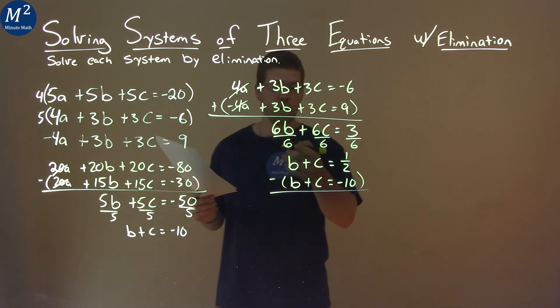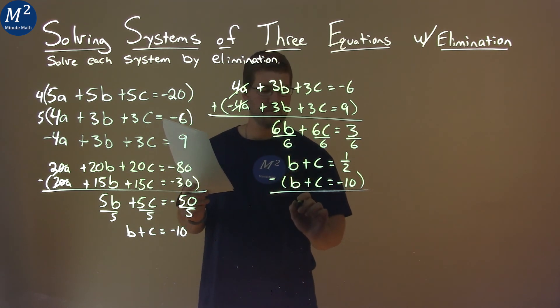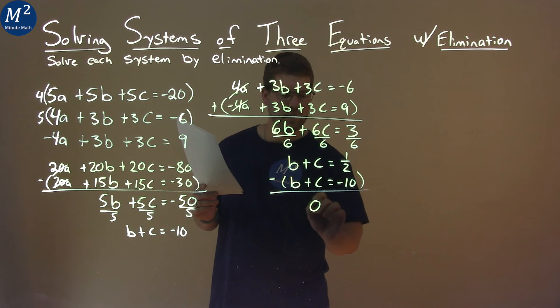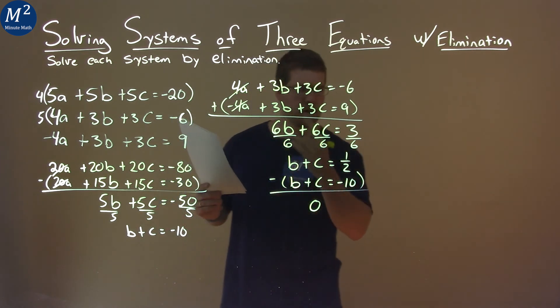Well, by doing so, our b values cancel. b minus b is 0, and c minus c is also 0. So we have 0 on the left-hand side. That's weird. The variables all cancelled.